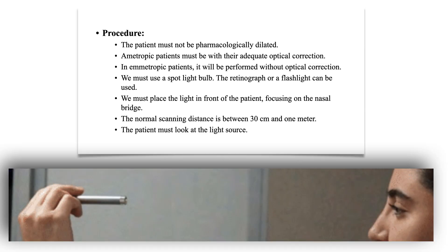Procedure: The patient must not be pharmacologically dilated. Emetropic patients must wear their adequate optical correction. In ametropic patients, it will be performed without optical correction. We must use a spotlight valve — a retinoscope or a flashlight can be used. We must place the light in front of the patient, focusing on the nasal bridge. The normal testing distance is between 30 cm and 1 meter. The patient must look at the light source.